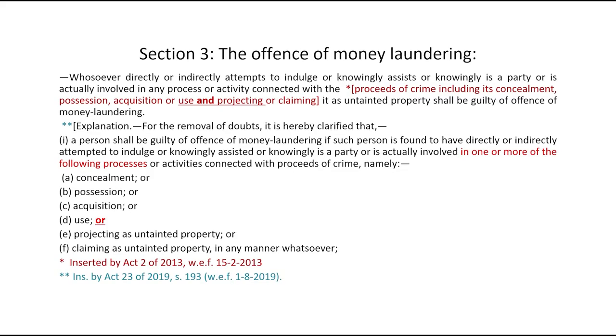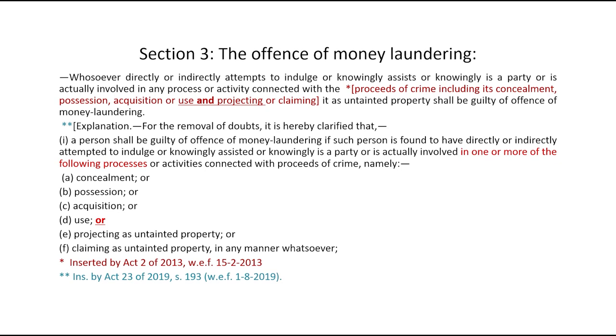As we saw previously, Section 3's explanation added after the 2019 Amendment Act requires that the word 'and' be read as 'or', meaning that along with the four ingredients — Possession, Acquisition, Concealment, or Use — the word 'or' has been added after clause D. So the word 'and' is now to be read as 'or'.